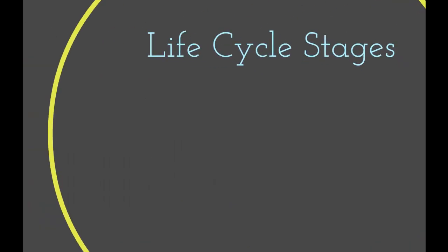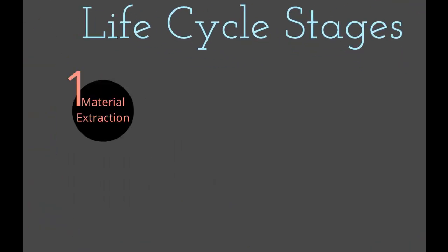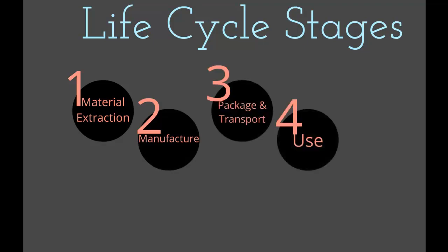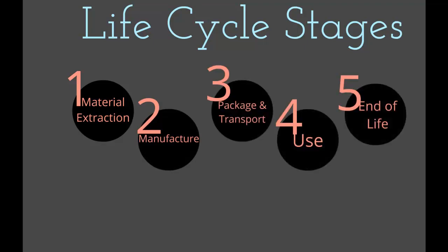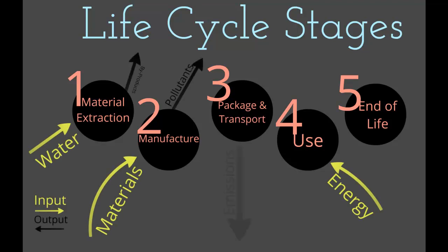Essentially everything that is created goes through several key life cycle stages: the extraction of raw materials, manufacturing, transportation and packaging, use, and end of life. Each of these life cycle stages has a variety of inputs such as material, energy and water, and outputs such as waste, emissions, pollutants, and byproducts.